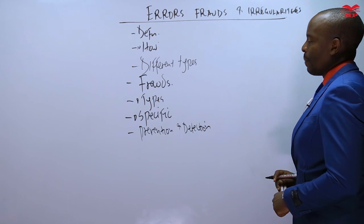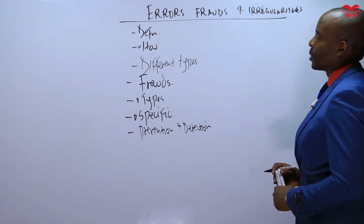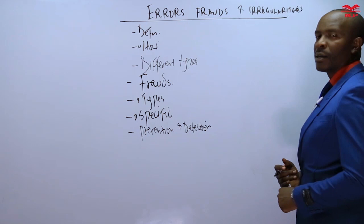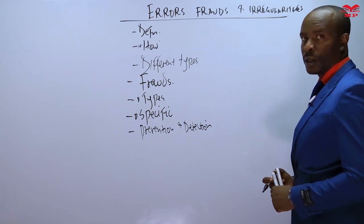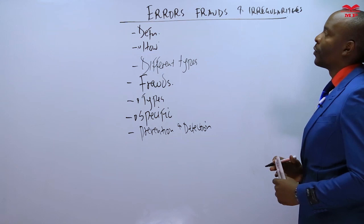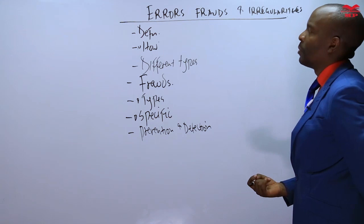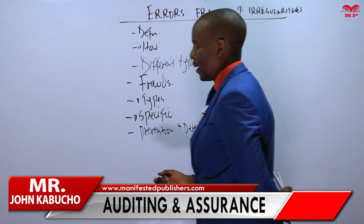There is also a very important part related to errors and frauds — that is when you're investigating errors for the purposes of presenting evidence in court. We call that fraud deterrence and detection, and this will be covered in a forensic audit, which follows this particular topic. So this is a straightforward area and I'm going to make it simpler for you.